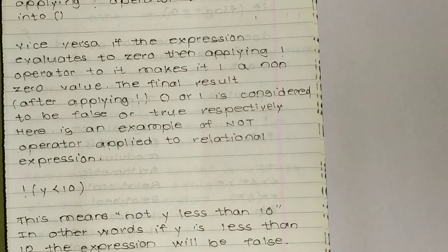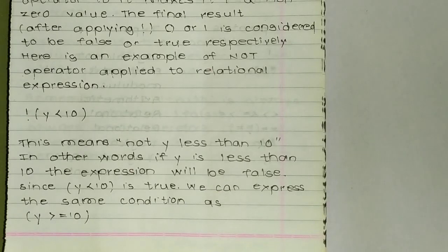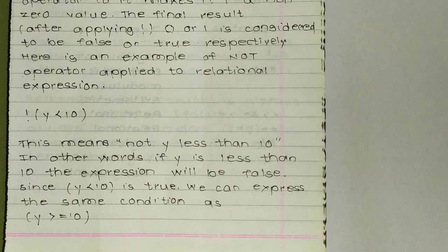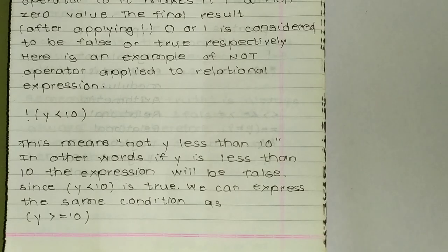For example, !(y < 10). This means: if y is less than 10, the expression will be false. Since y < 10 is true, applying NOT reverses it. We can express the same condition as y >= 10. It reverses the result.